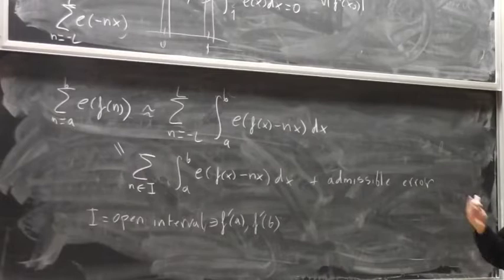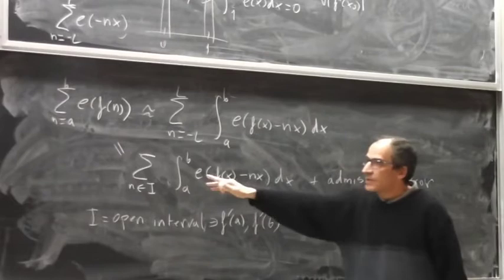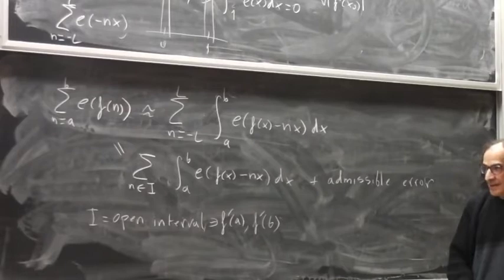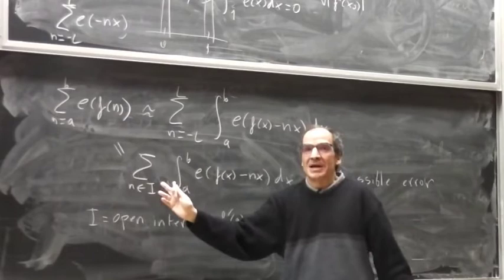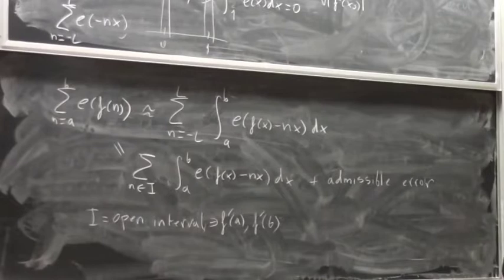The moral here is: you have an exponential sum — this is difficult, very difficult in general — and you can rewrite it as a sum of exponential integrals. The trick is that this sum can be very large; if the derivative is very large, this is very bad, because you are replacing something with a larger sum. But sometimes one gets something out of this.